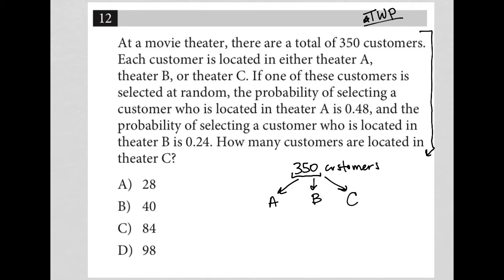If one of these customers is selected at random, the probability of selecting a customer who is located in theater A is 0.48. Okay, so if the probability of selecting a customer at random and they happen to be in theater A is 0.48, that basically means that 48% of the customers are in theater A. If I know that I have 350 customers, I can actually figure out the exact number of customers in theater A by multiplying 0.48 times 350. I'm not going to solve that quite yet because I don't know if that's what we're looking for, but that is exactly what you would do to figure out the exact number of customers in theater A.